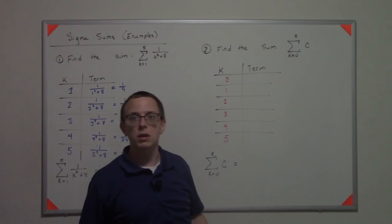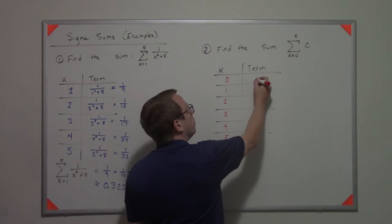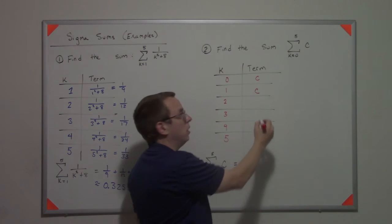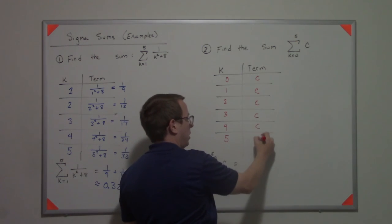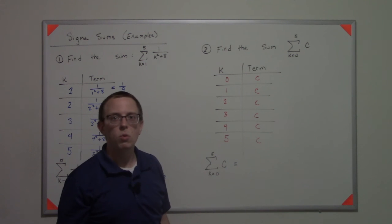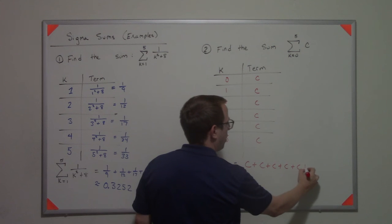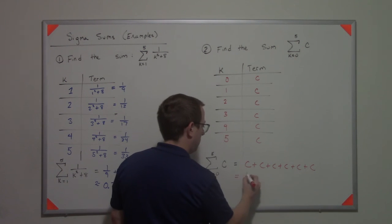Now over here it doesn't have the index in the expression. So in each case it's just C and then it's just C and then C and C and C and C. So it's one plus two plus three plus four plus five plus six C's.